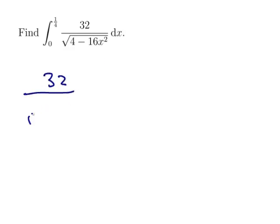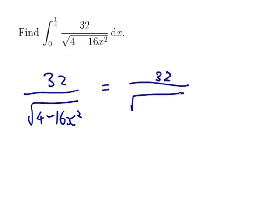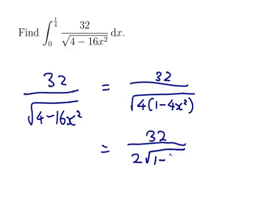So 32 over the square root of 4 minus 16x squared. If it was the derivative of arcsine, there'd be a 1 in that spot there. So what if I take the 4 out like that? And then square roots can be distributed over times, so I can do those square roots separately. So the square root of 4 would be 2 and the square root of 1 minus 4x squared would be the square root of 1 minus 4x squared.